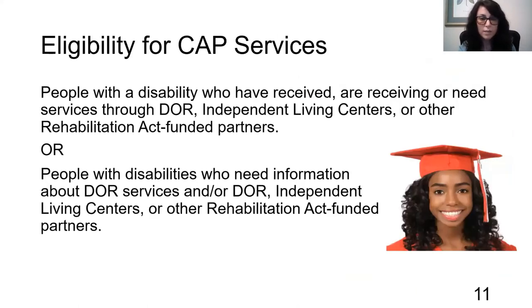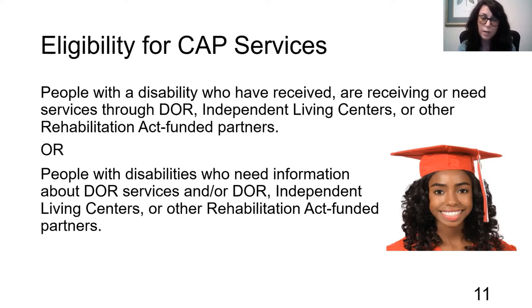To get services from the CAP program, you have to be a person with a disability who has received, is receiving, or needs services through the Department of Rehabilitation, Independent Living Centers, or other Rehabilitation Act funded programs. We also get many calls from people who just want information about what types of employment services might be available to them as a person with a disability. A DOR client can appeal any action or inaction by the DOR that they disagree with, so we get calls about all kinds of things.